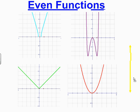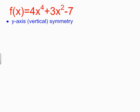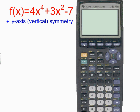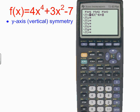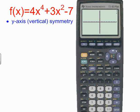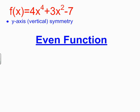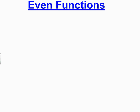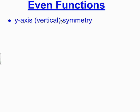So if I want to test graphically to see if a function is even, I can go to my graphing calculator in y equals and enter the function: 4x to the fourth power plus 3x squared minus 7. I'm going to look at that in the graph, and I notice right away that along this y-axis, I have vertical symmetry, which makes this an even function.